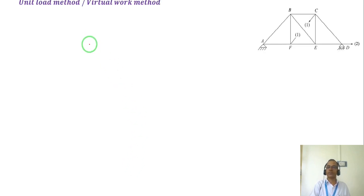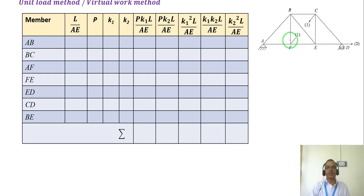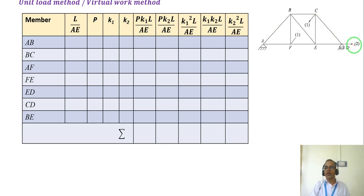The flexibility coefficients are Ki times Kj times L divided by EA summed for all members. Once we determine these, we use the compatibility equations. We form a table with members AB, BC, AF, FE, ED, CD, and BF. For each member we find L/EA, where L is the length, A is the area of cross-section, and E is the modulus of elasticity. P is the member force due to live load. K1 is the force in all members due to unit load at coordinate 1, and K2 is the force in all members due to unit load at coordinate 2.